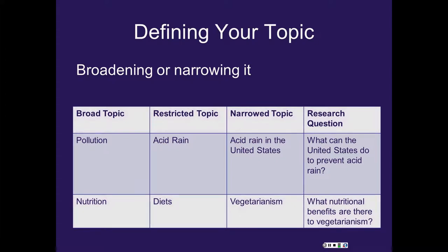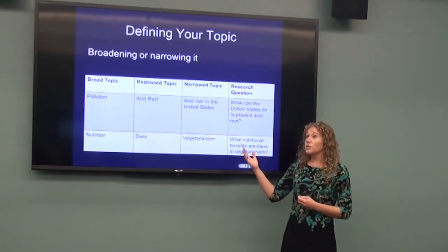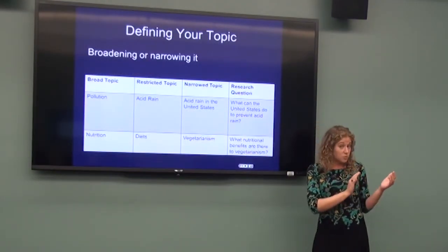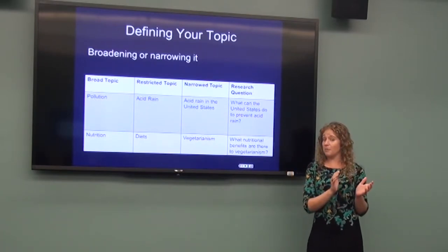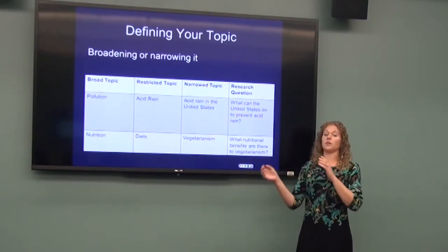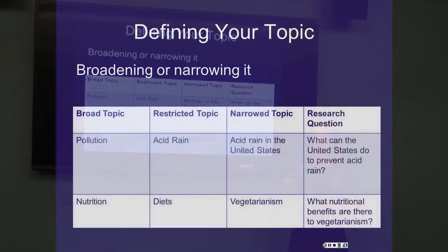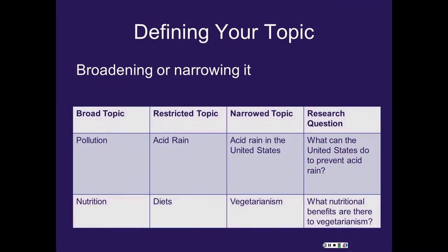A more focused topic would be acid rain, which is a good start, but again, still going to get too many articles. So they narrowed it once further to specify the United States as the area for acid rain, and then combined all of those things to make an actual research question: What can the United States do to prevent acid rain? There can be topics that are too specific as well. It really is finding that balance between not too broad but not too specific. Find a comfortable range, and a librarian can work with you if you're having trouble defining your actual topic.